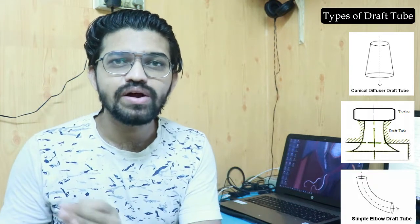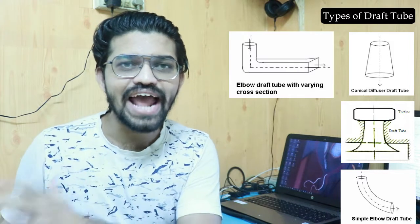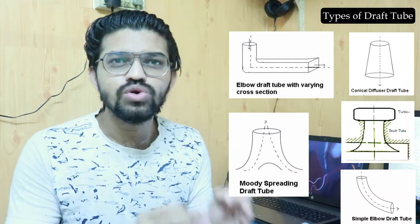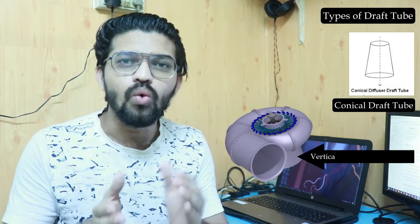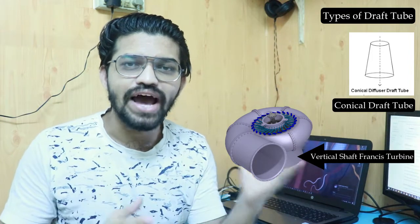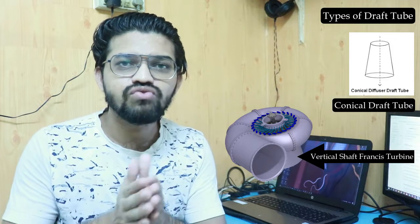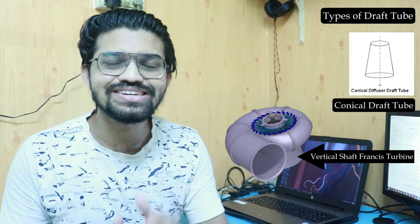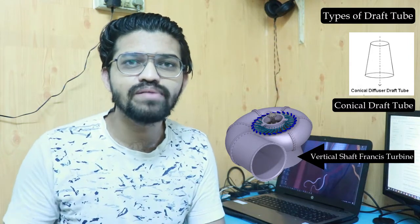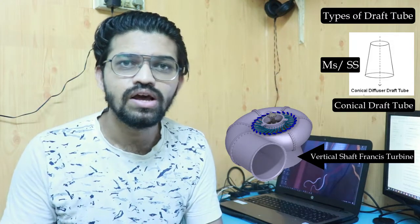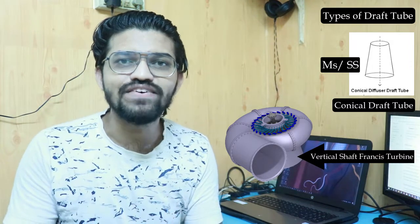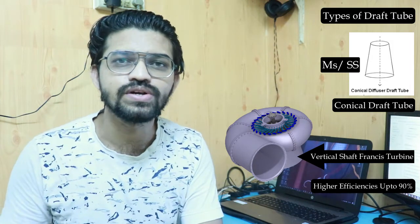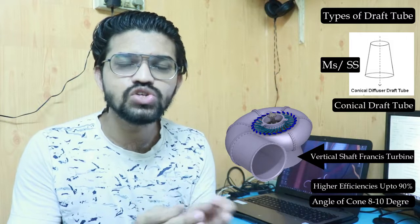There are mainly five types of draft tube. The first is the conical draft tube, which is mostly suitable for vertical shaft Francis turbines. As seen in the previous example, it is shaped like a frustum of a cone. It can be made of mild steel (MS) or in certain scenarios stainless steel. This type of draft tube has a very high efficiency of around 90%. The angle of the cone is limited to between 8 and 10 degrees.